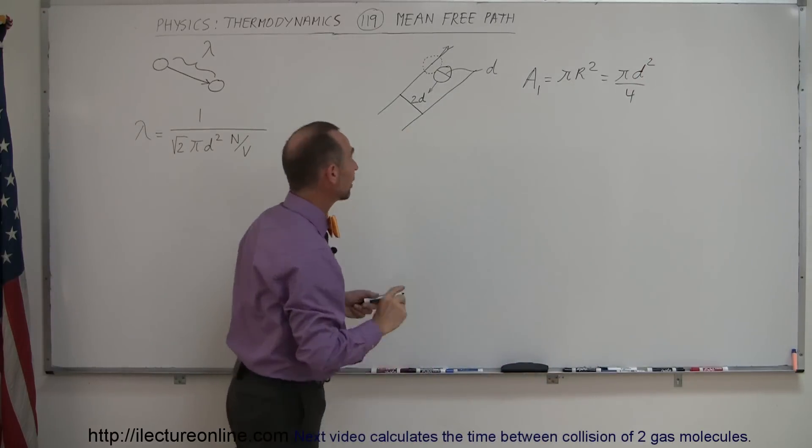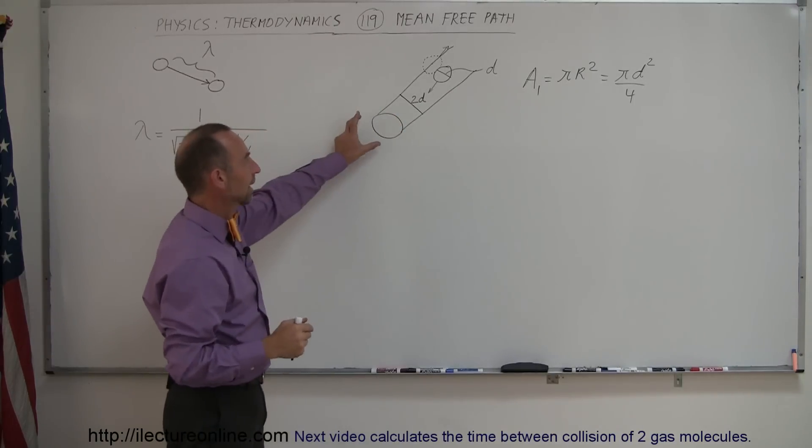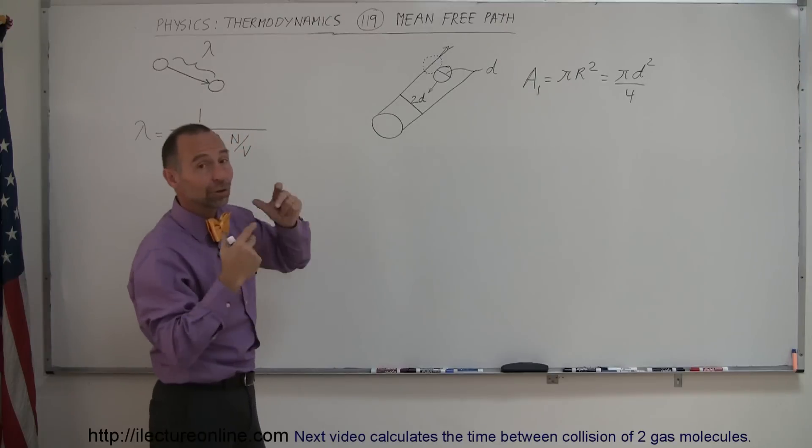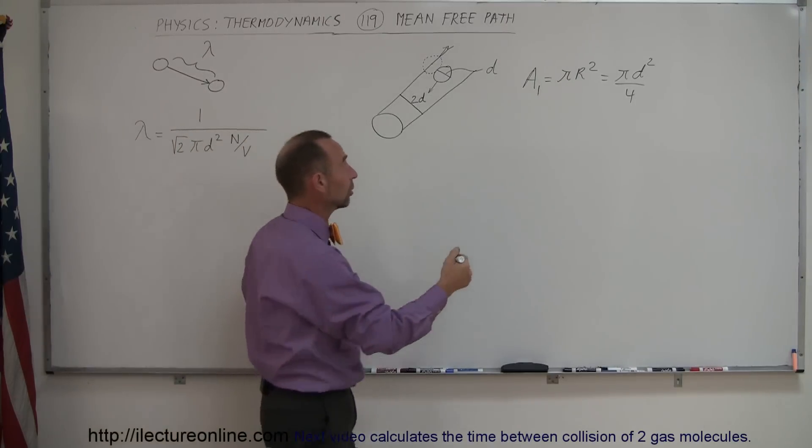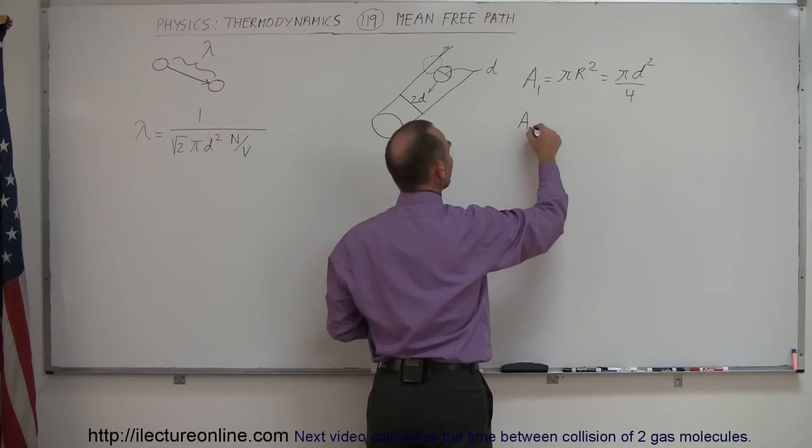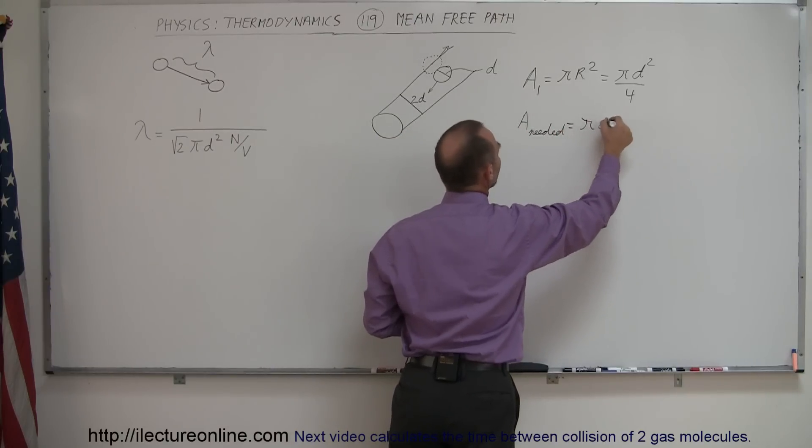But if you think about it, you really want to have this entire area free that would be twice the diameter. So therefore the diameter of the path that the molecule has to have so it doesn't collide with another molecule has to be four times as large. So the area needed is equal to four times that or π d squared.